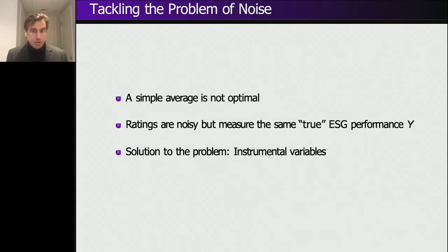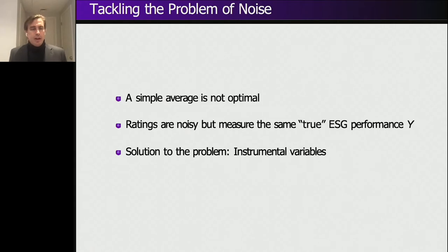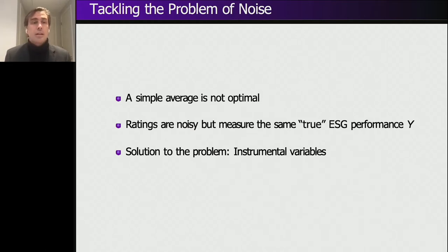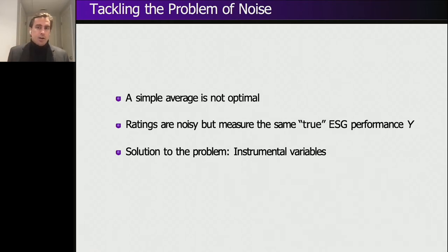This is exactly the noise we are trying to correct for. If you have a set of ratings — we have eight in our paper — the first thing you could do to reduce the noise would be taking an average across all eight, and then using that in your portfolio or financial regression. But this is not optimal. We can actually do much better, and we show that in our paper.